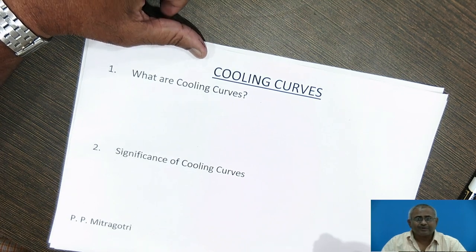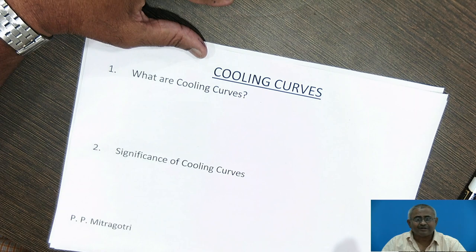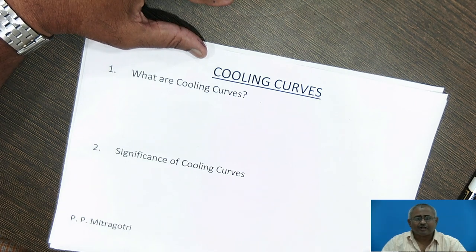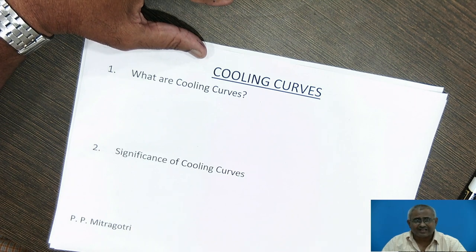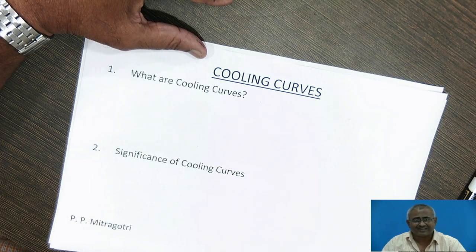Cooling curves are a graphical representation of phase transformation occurring during liquid to solid phase. These cooling curves are a plot of temperature versus time — temperature on the y-axis, time on the x-axis.